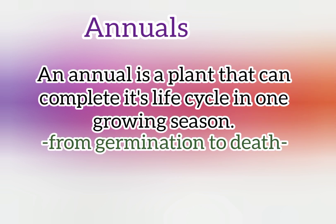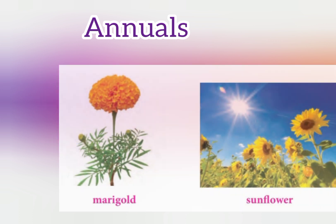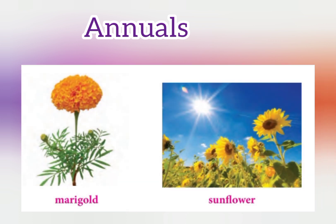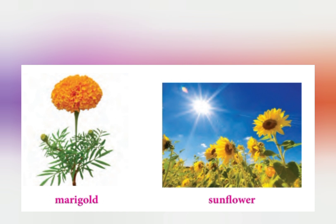An annual is a plant that can complete its life cycle in one growing season. For example, Marigold and Sunflower.